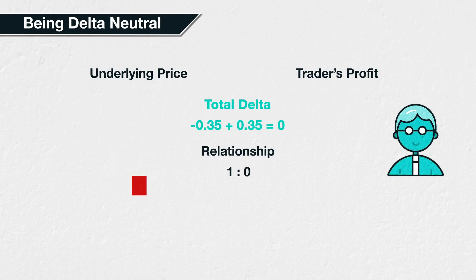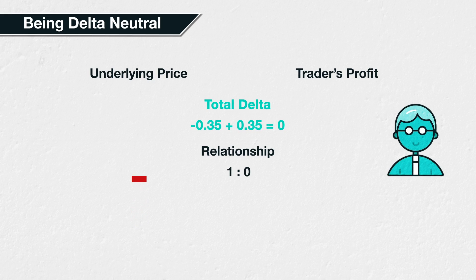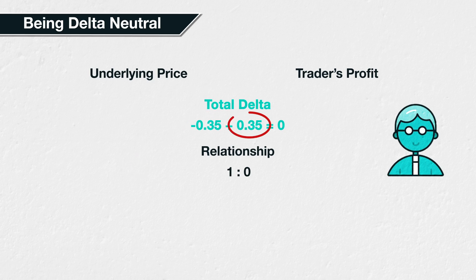As we've discussed throughout section 8, an options delta is also not static. So a trader wishing to remain delta neutral may have to adjust their hedge over the course of the trade. For example, imagine a trader has sold an out-of-the-money call option, giving them a delta of minus 0.35. To hedge this delta, they have purchased Bitcoin futures contracts with a position size of 0.35 Bitcoin. Therefore, they are currently delta neutral.